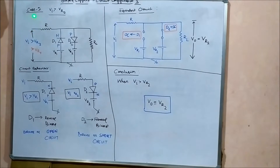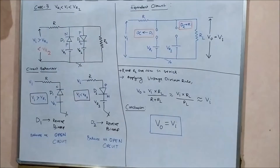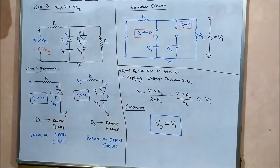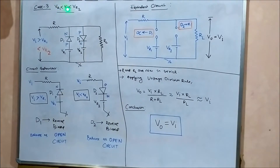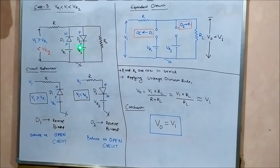Now case three: the input voltage lies in between the two reference voltages Vr1 and Vr2. That is, Vi is greater than Vr1 but lesser than Vr2, meaning Vr1 is lesser than Vi, which is lesser than Vr2. We will analyze the behavior of diodes D1 and D2 separately.